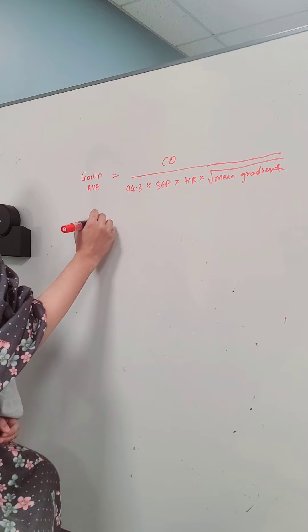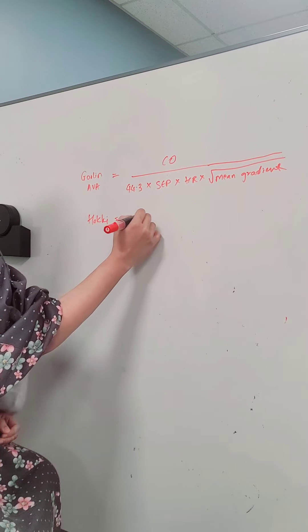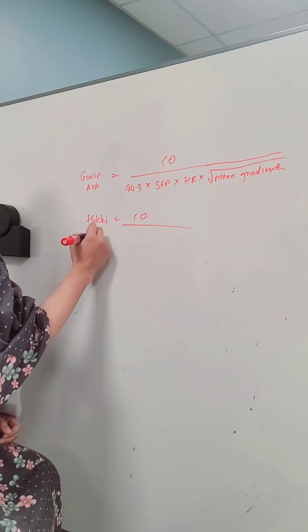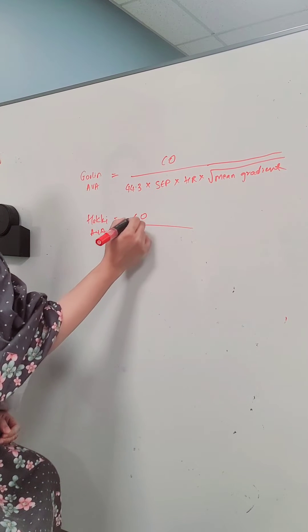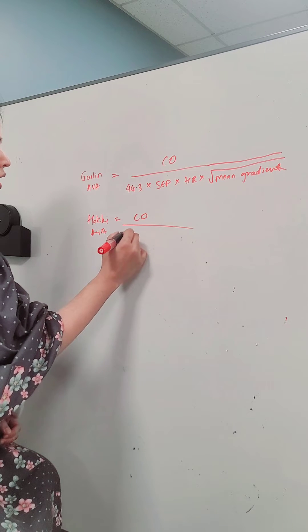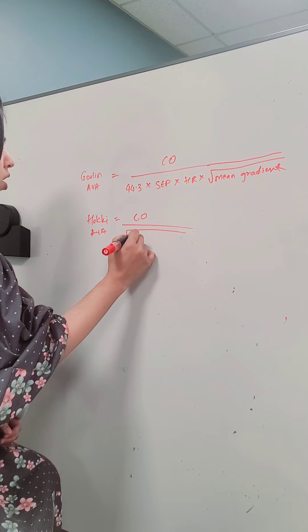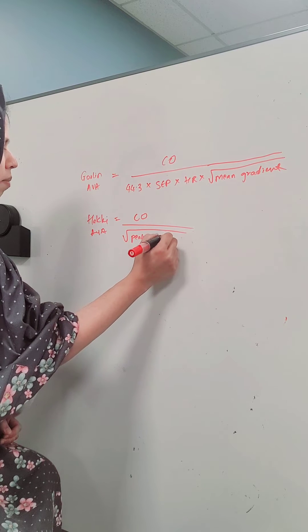And the Haki equation is a simplified version of the Gorlin equation and it is basically the cardiac output divided by the square root of the peak-to-peak gradient that you measure in the cath lab.